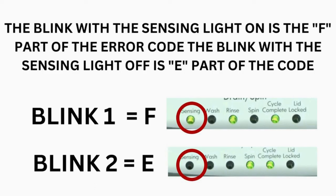Which lights are illuminated indicate the numbers. The sensing light on indicates the letter F. The sensing light off indicates E.